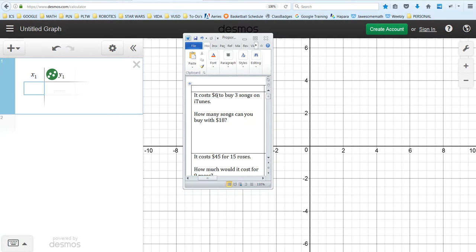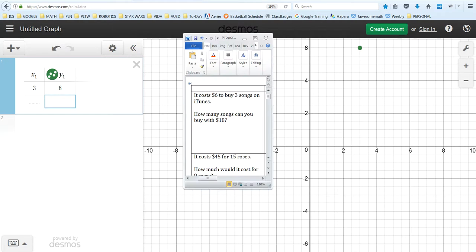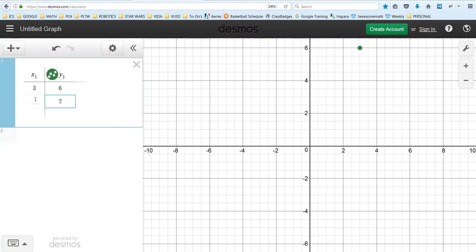So it costs $6 to buy three songs. Three is my X, six is my Y, and if it costs six dollars to make three songs, it's going to cost two dollars to make one. We could do a proportion to solve that, but I'm going to fast track and assume that we've already done that.